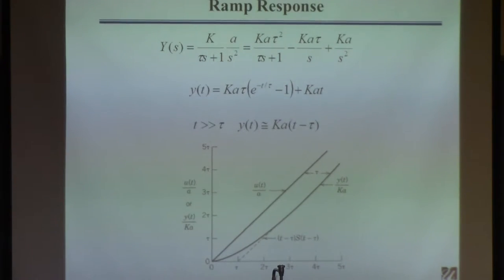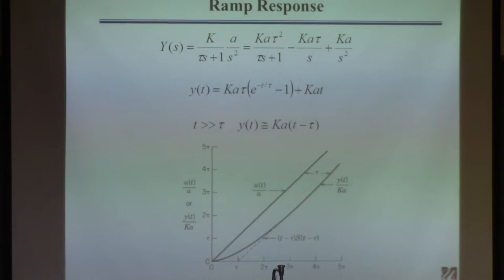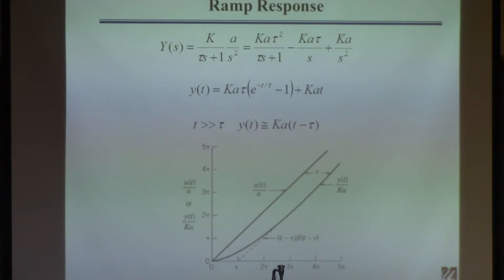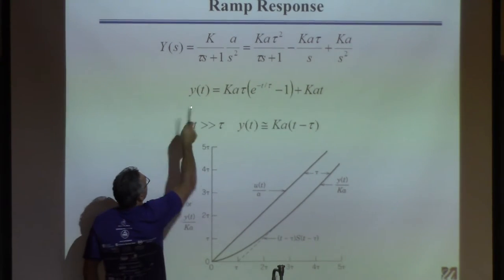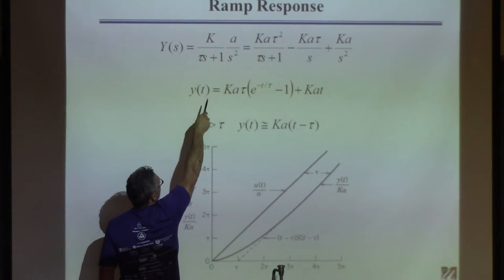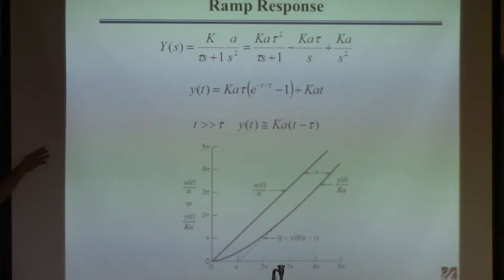What if we subject the system to a ramp instead of a step? This is less common. Y equals G times U, where G is first-order and U is the ramp: a over s squared. You look at that and realize it's not in the table, so you have to take the inverse Laplace transform via partial fraction expansion. You'll get a term over (tau s + 1), another term over s, and another term over s squared.